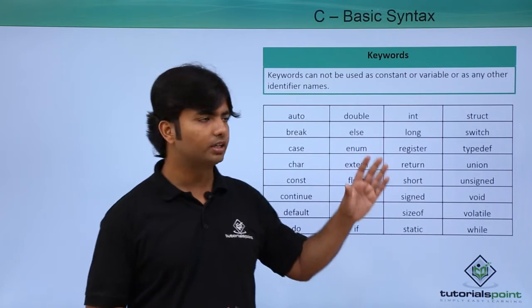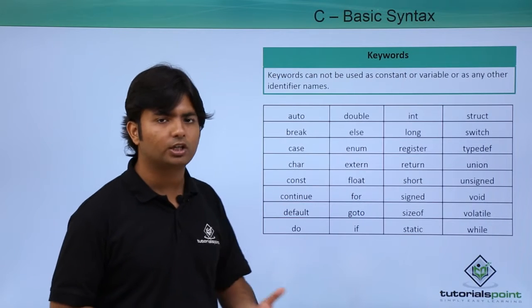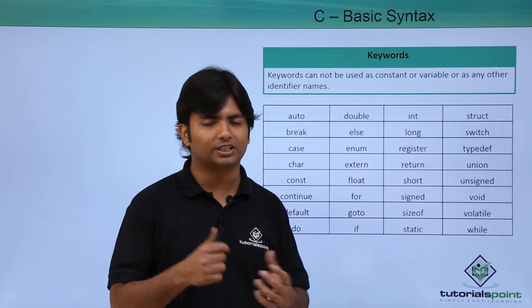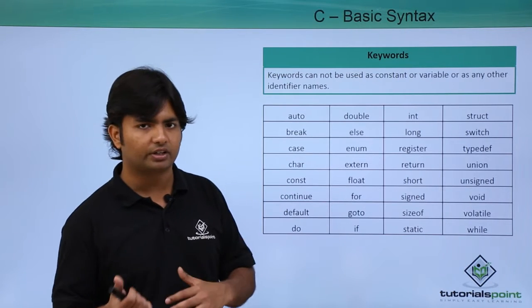Now let's talk about keywords. In C language we have 32 keywords which have specific tasks. Some of them are for data types, some of them for returning.